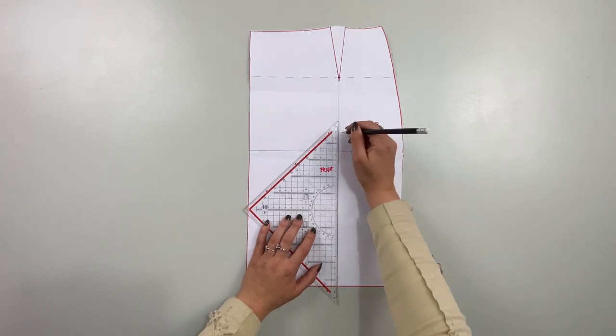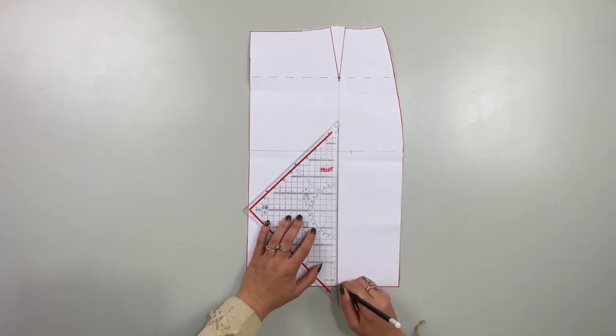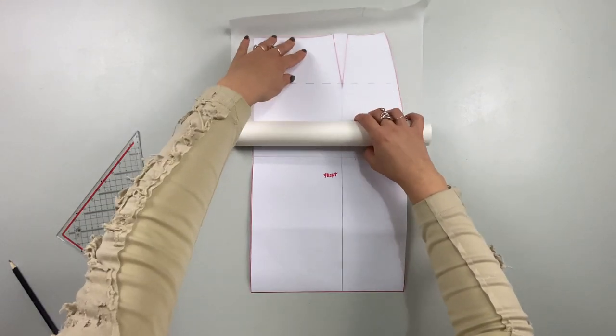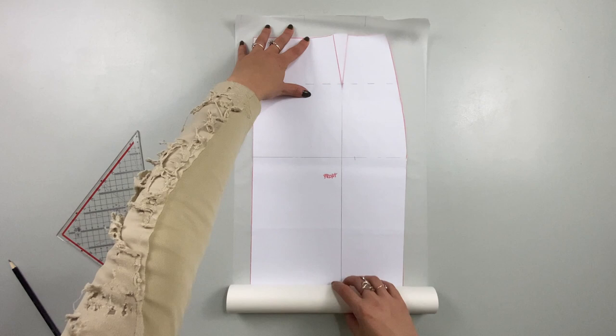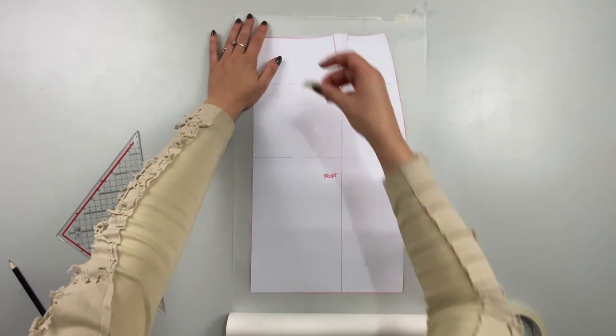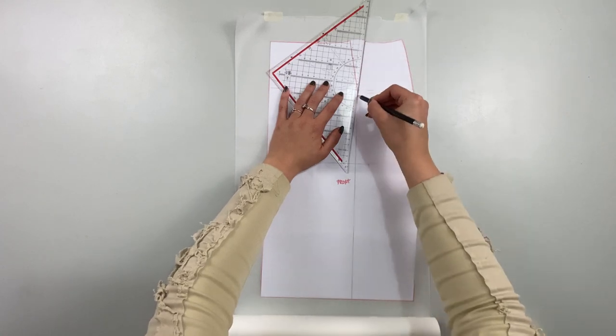Make sure the line is in a 90 degree angle to the hip line and to the hemline. After you have drawn that line, I take the transparent pattern paper and lay it on top of the pattern. I start by tracing the side part first.